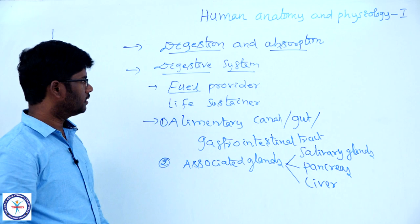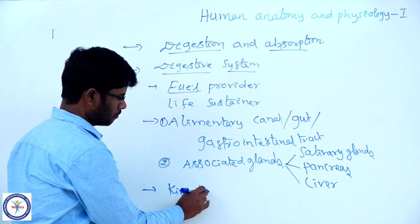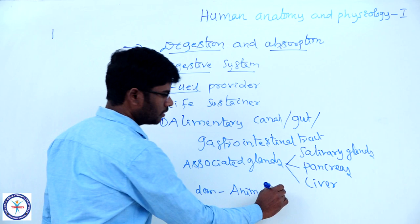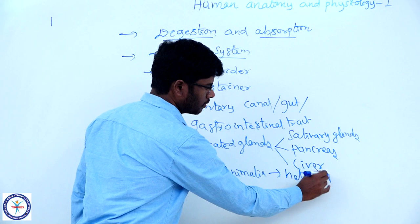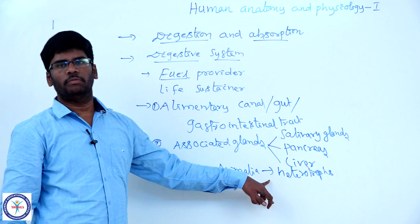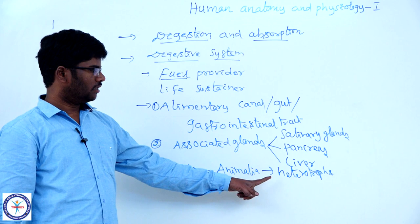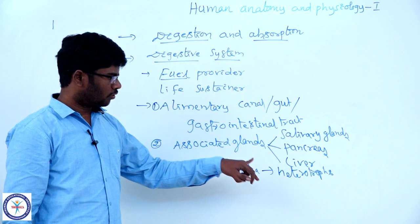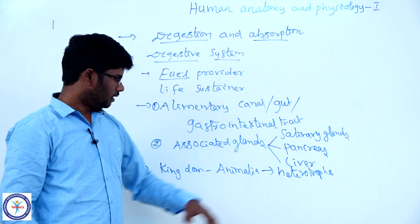We will discuss all these things one by one in the coming part. Kingdom Animalia includes heterotrophs. Heterotrophs cannot prepare their own food materials; they depend upon autotrophs. Autotrophs are organisms that can make their own food materials.